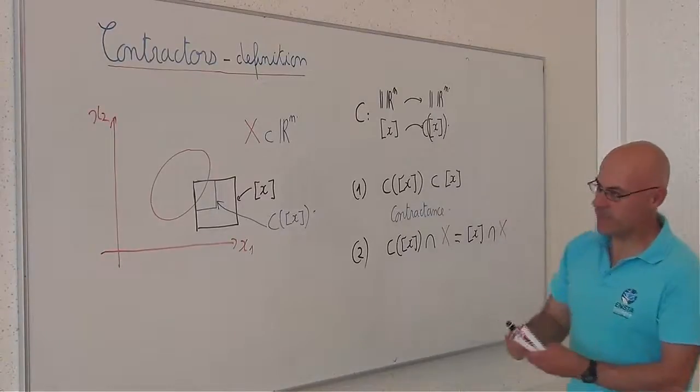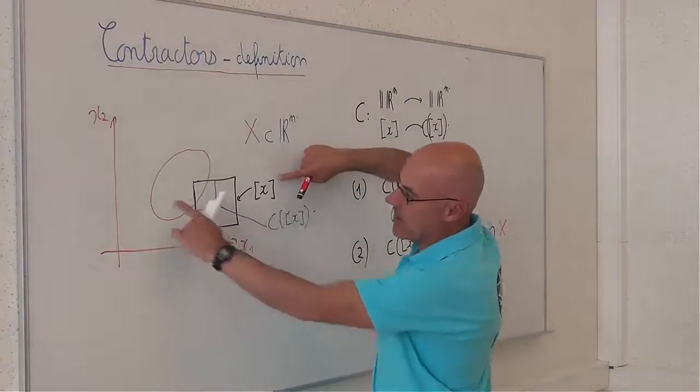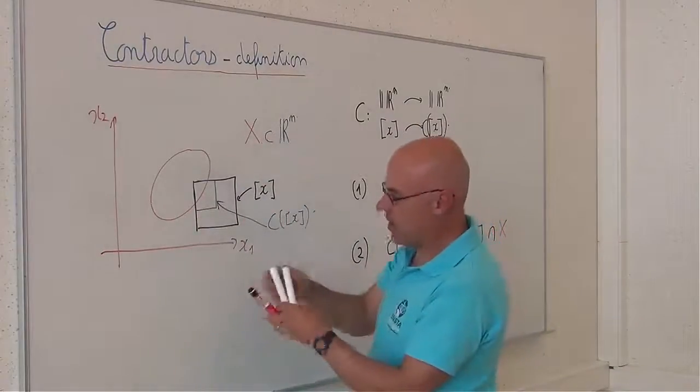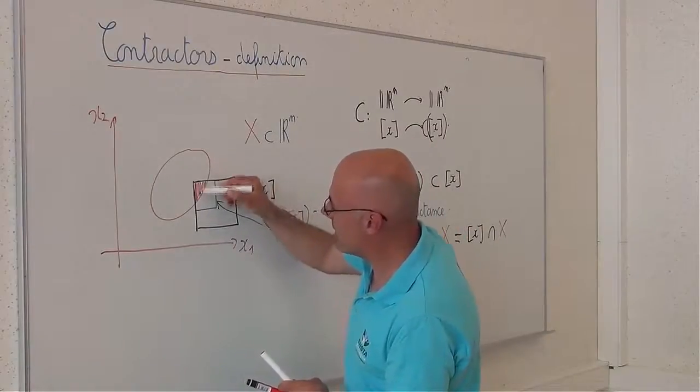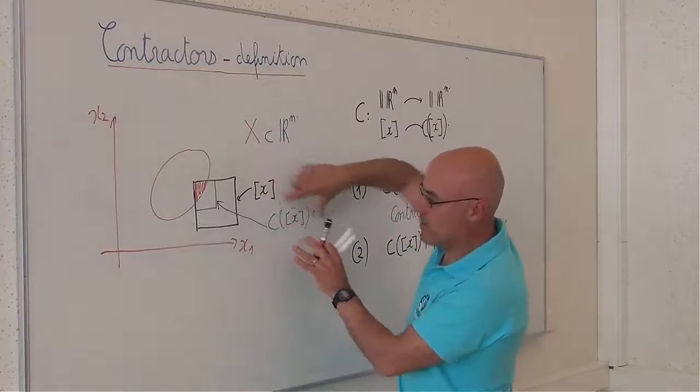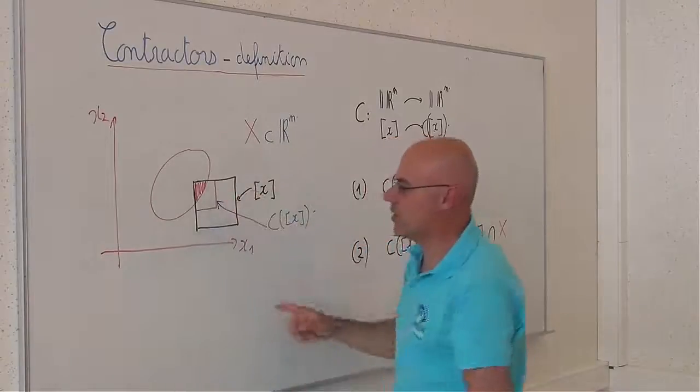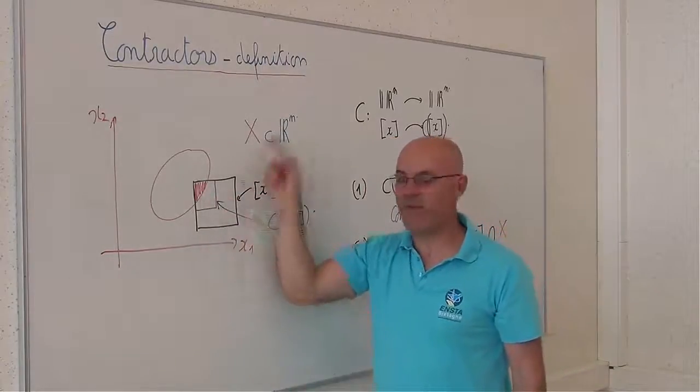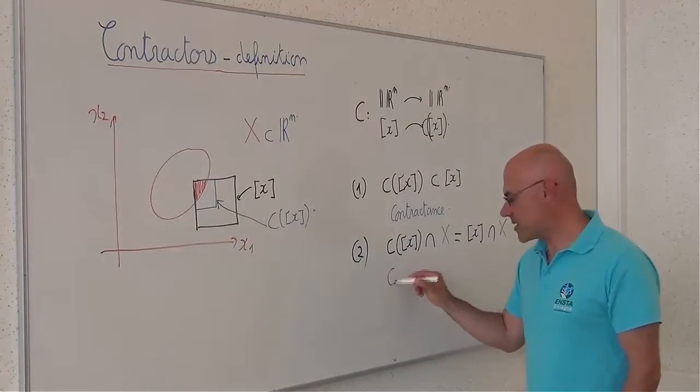So it means that the intersection between the black box and the red set corresponds to this part of R^n. This intersection is the same before contraction and after contraction. No points of X have been removed. This property is called the completeness.